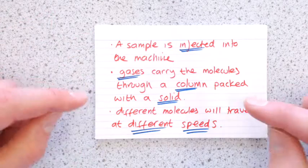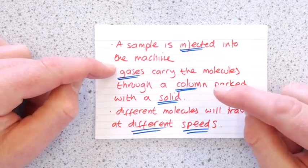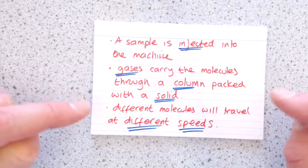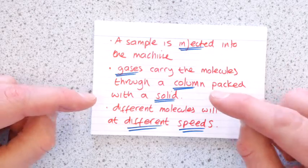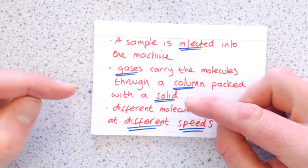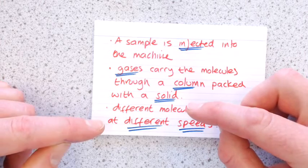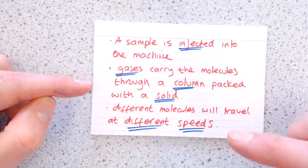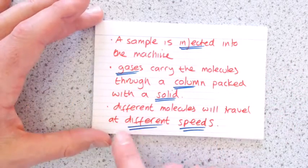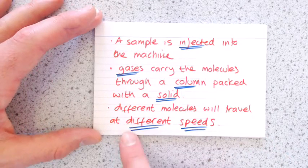Essentially those molecules then interact with the gases and the solid. And depending on which they interact with more, if they interact with the solid loads, they'll take longer to go through the column. If they interact with the gas more, then they'll go through the column faster. So because of this, different molecules will travel through the column at different speeds.